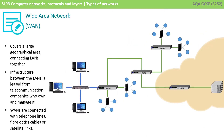With a wide area network, we cover a much larger geographical area, and these often connect LANs together. The infrastructure between the LANs tends to be hired from telecommunications companies who own and manage it. WANs tend to be connected with telephone lines, fibre optic cables, or satellite links.